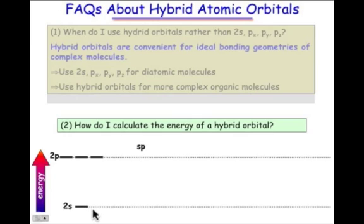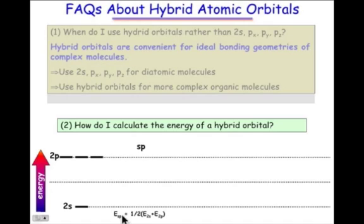We're going to begin by looking at a typical second row atom in the periodic table that has a 2s and three 2p orbitals involved in valence bonding. For sp hybridization, the resulting sp energy level is a weighted average of the s and p orbitals from which it's derived — one part s, one part p — so the average is exactly 50% of the way between the 2s and the 2p levels.